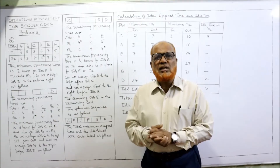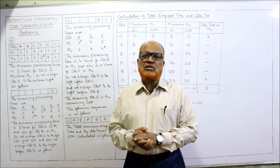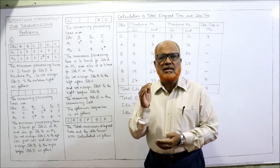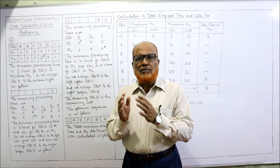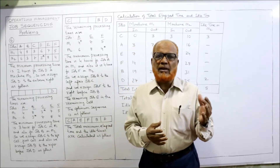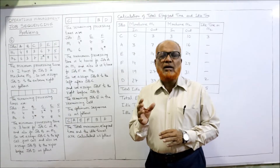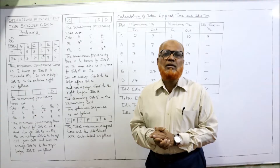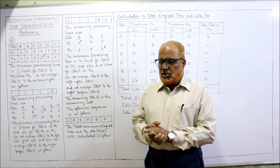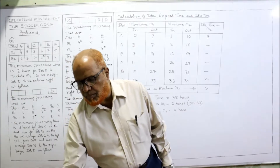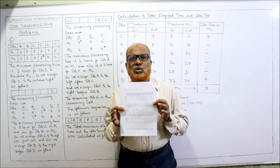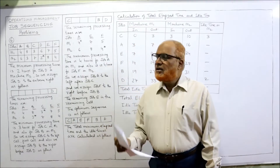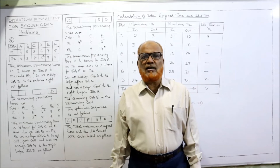That is the objective. Johnson and Bellman have given the procedure: first compare all the processing times. Whichever processing time is less — for which job — if the job is on machine M1, assign from the left. If the minimum time is on machine M2, assign from the right. Like that we make the assignment till we get the optimal solution. Before starting the sixth problem, I expect my viewers to have a printout of the problems given in the link under my description. Always keep it ready and take a screenshot of the points I have written.